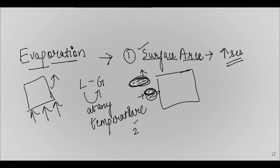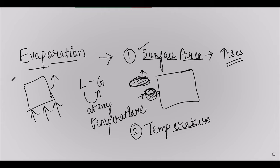The second factor is temperature. When drying wet clothes under the sun, if there is no sun or it is a rainy day, the temperature is not high, so the rate of evaporation decreases. But if the temperature is high, the rate of evaporation also increases. On a sunny day with high temperature, wet clothes dry easily because the rate of evaporation is high.